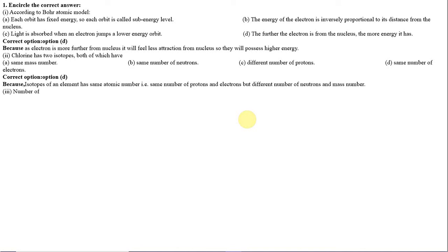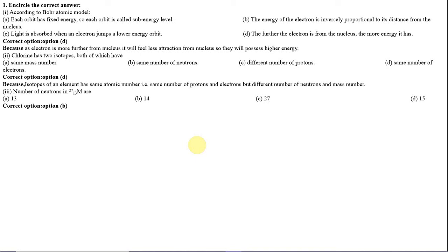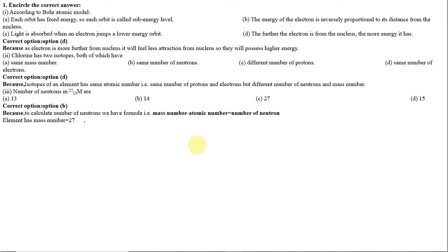Number 3: Number of neutrons in a metal with atomic number 13 and mass number 27. Option A: 13, Option B: 14, Option C: 27, Option D: 15. The correct option is 14, because to calculate the number of neutrons the formula is mass number minus atomic number. The element has mass number 27 and atomic number 13, so 27 minus 13 equals 14 neutrons.